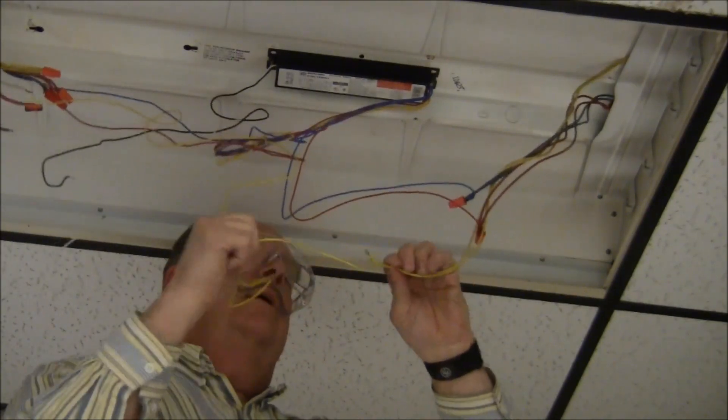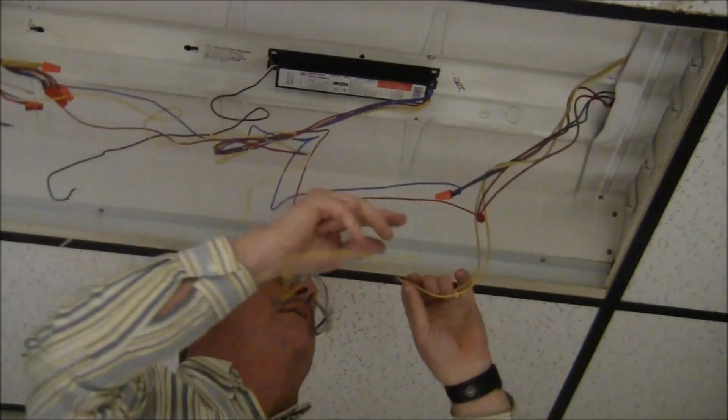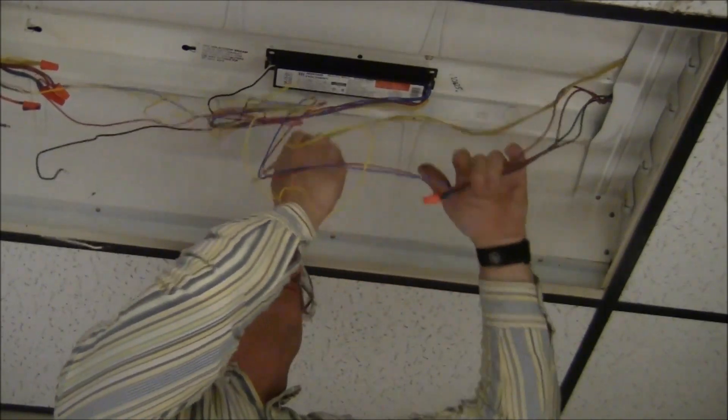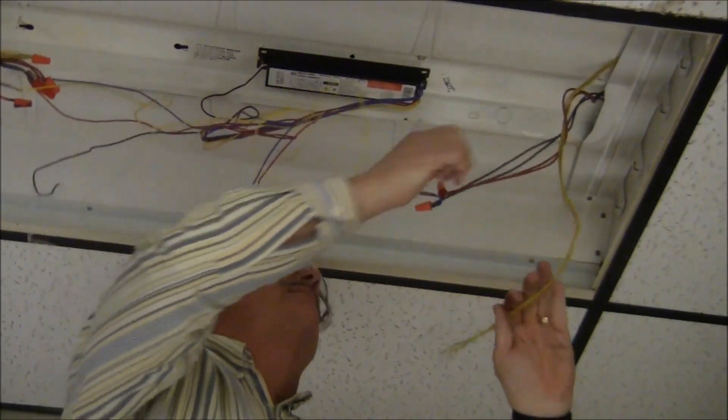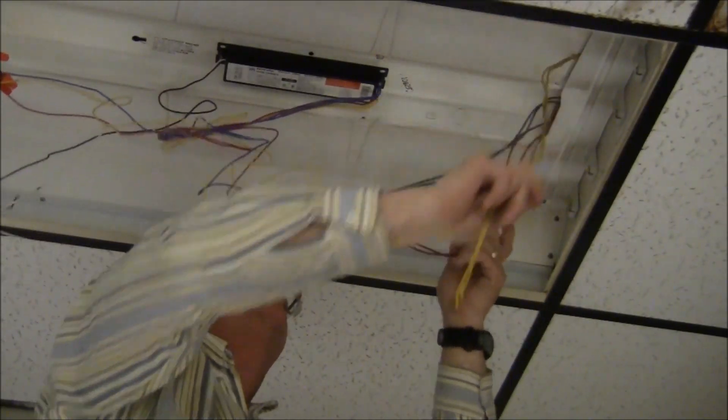socket and then jump right over to the other socket. These two yellow wires right here are key to making this conversion very fast and very easy.